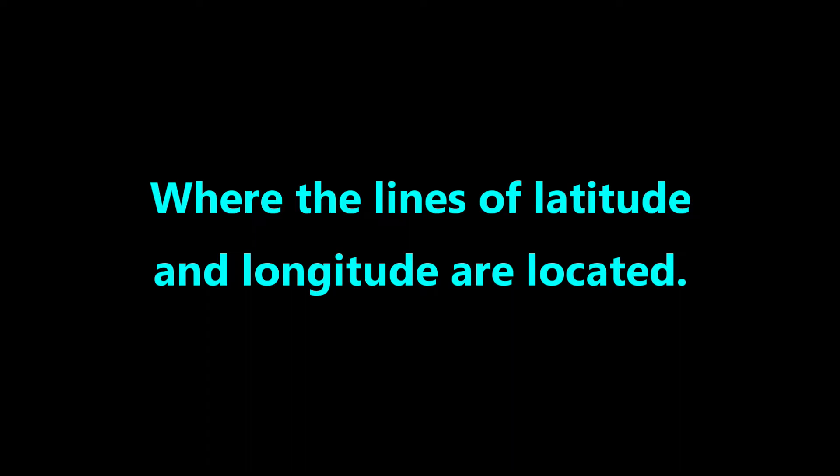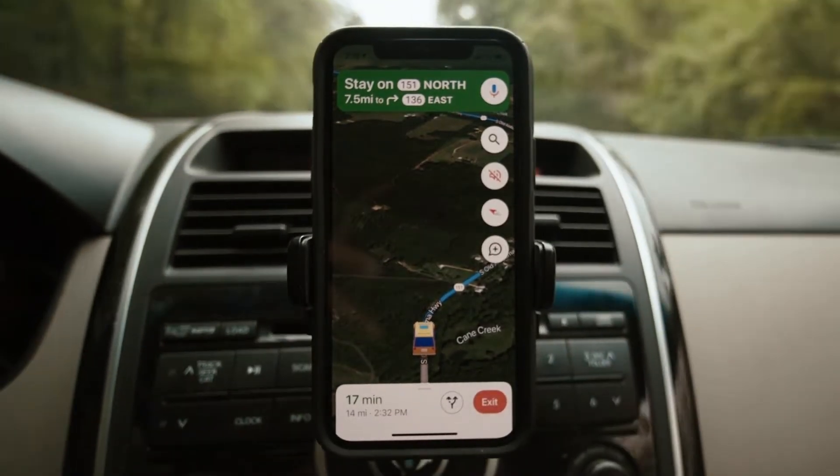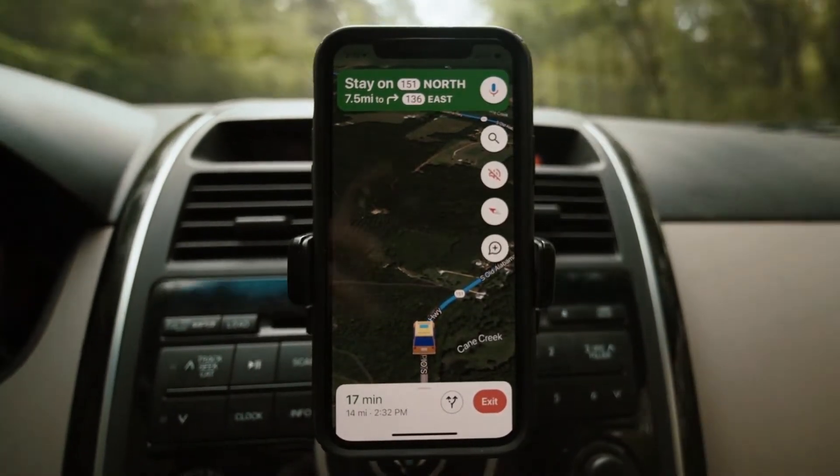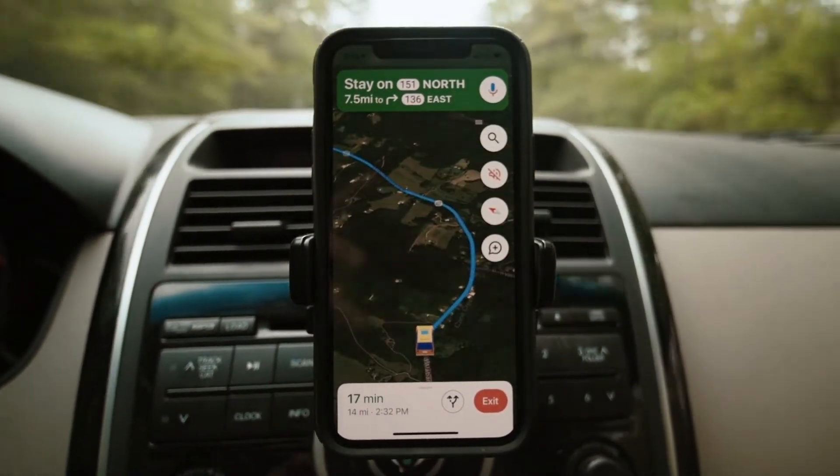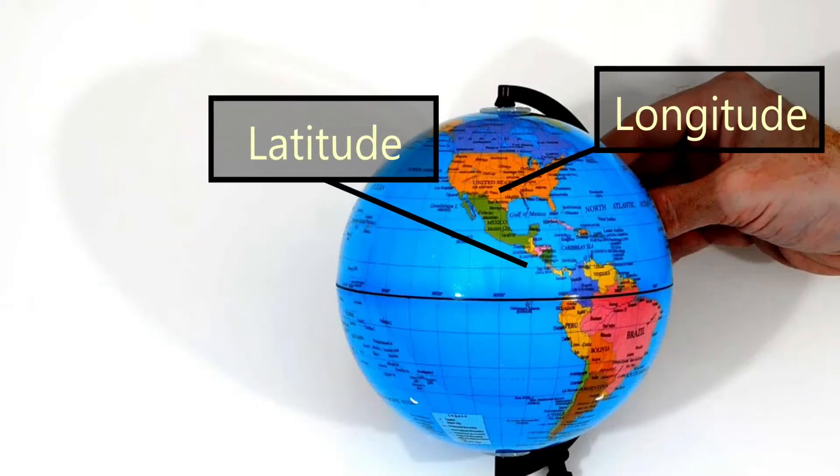Next, we'll introduce where the lines of latitude and longitude are located. In order for our GPS-enabled devices to work, there must be definitions of exactly where the lines are that make up this imaginary grid. There are several ways to find the lines.